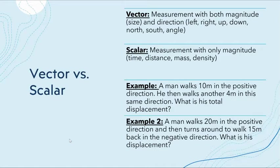A vector is going to be a measurement with both magnitude, which is a size, and direction — so it's either going left, right, up, or down. A vector is represented as an arrow, where the tail is at the starting point and the head is at the endpoint.